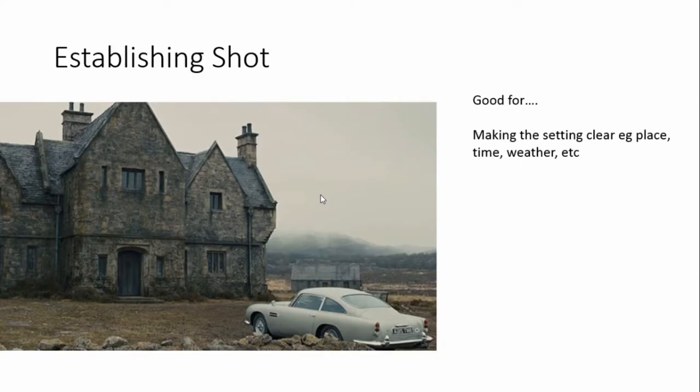An establishing shot is basically where you show the location. Normally you would have an establishing shot at the beginning of a scene — you see the building, the city, the countryside, or wherever the advert, music video, or film is set. It's good for making the setting clear so we understand where we are, what time it is, what season it is, what the weather's like, and that helps set the mood and tone.